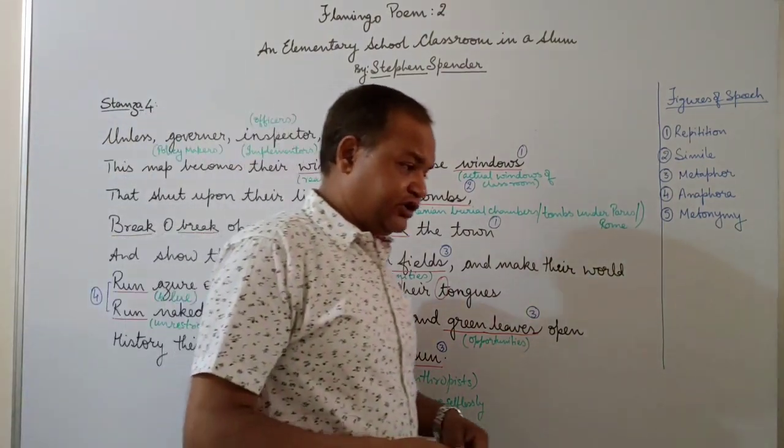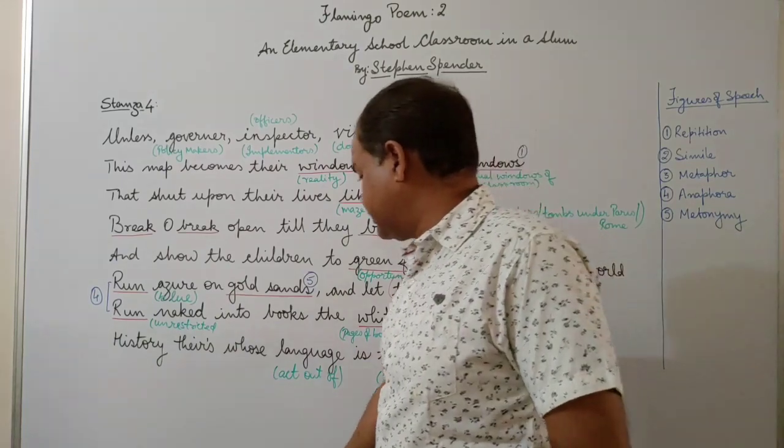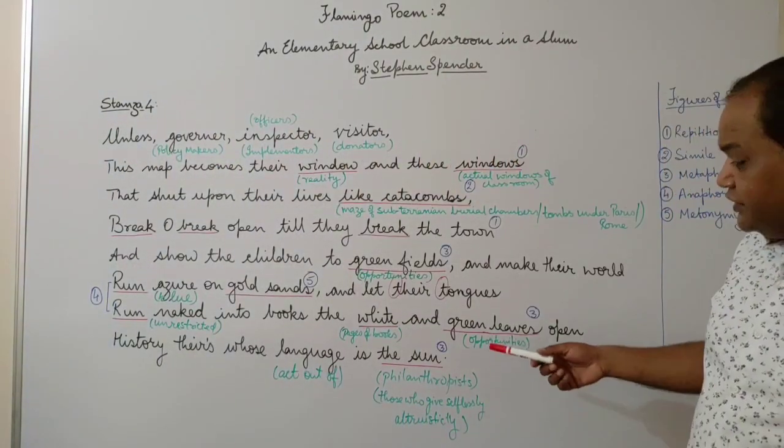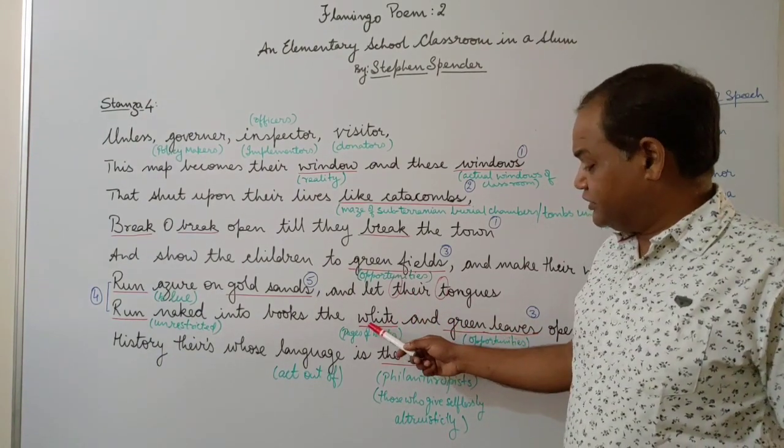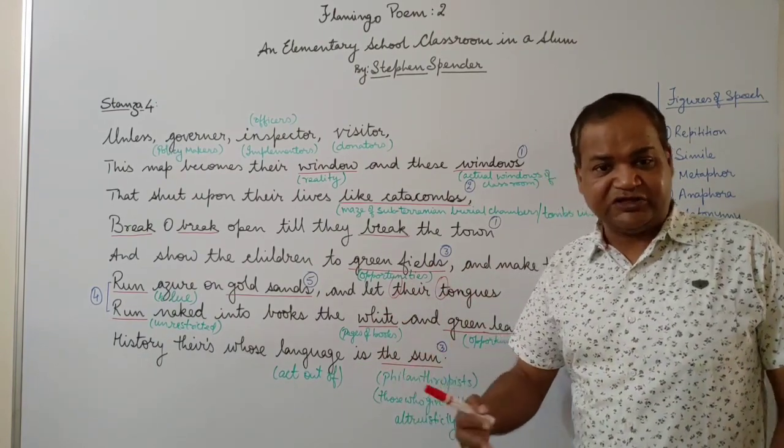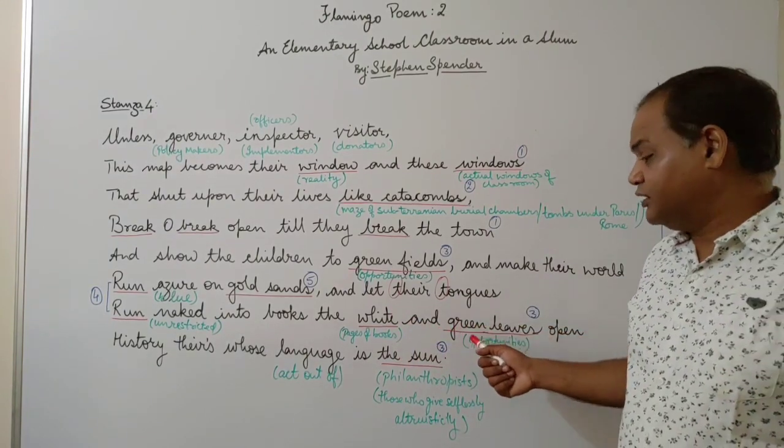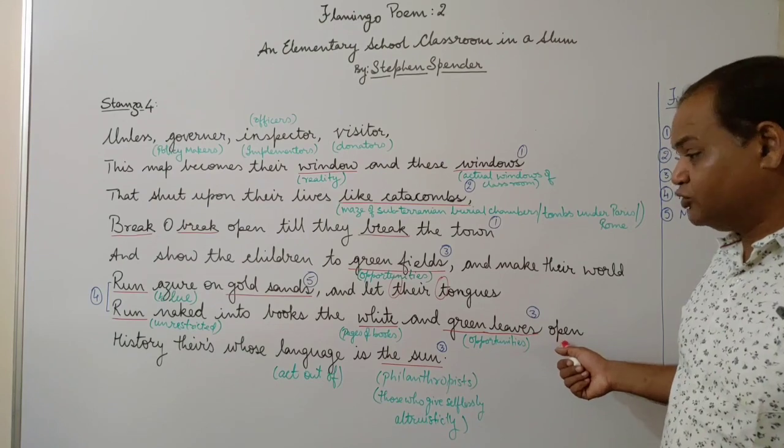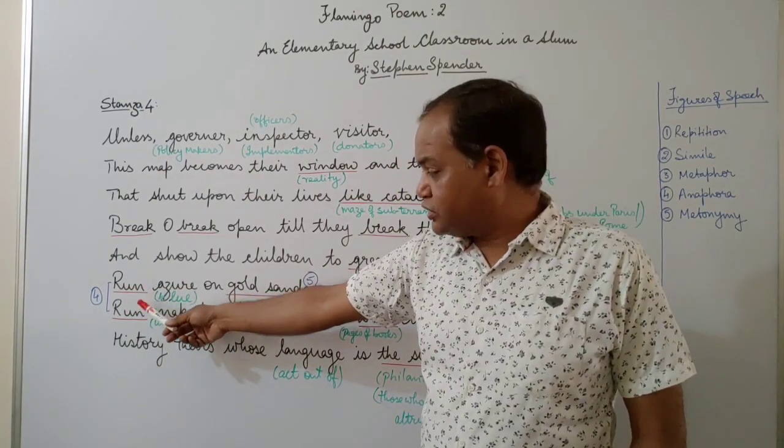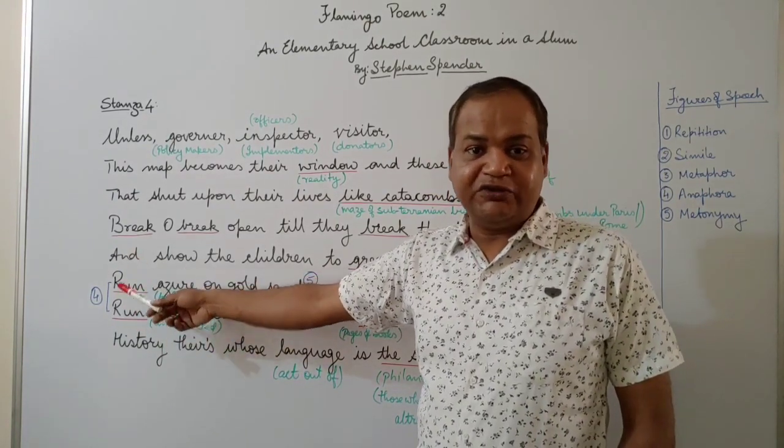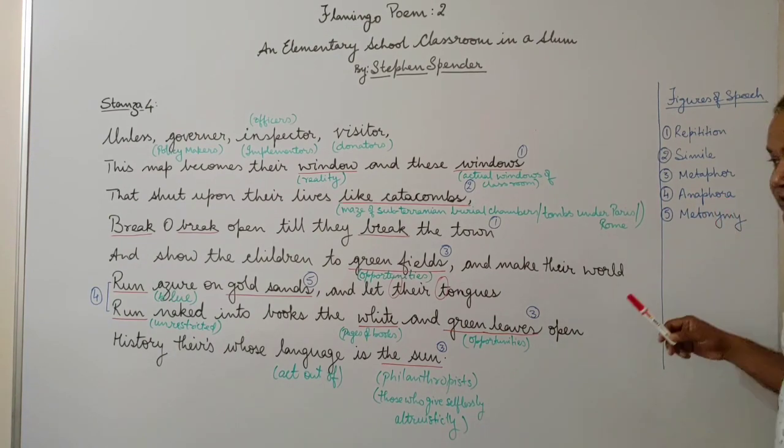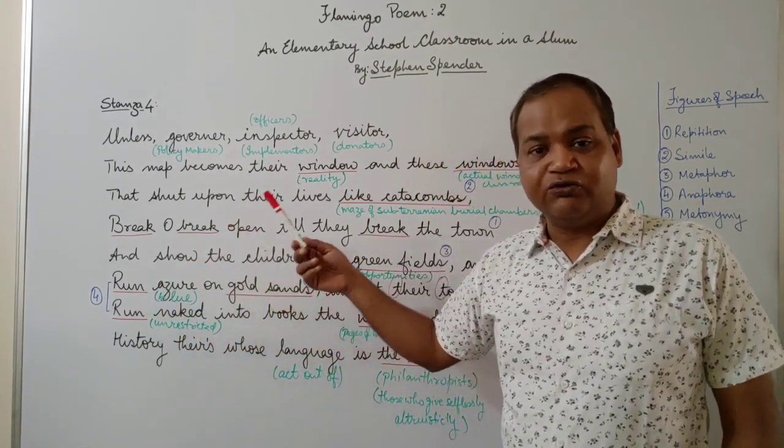And he says 'let their tongues run naked into books'—'naked' here means no holds barred, unrestricted, unrestricted access to education. Let these children have unrestricted access to education. Let them have the opportunity to study as much as they want, because when the white leaves, the pages of the books will be turned by the children, and then as they will go from one page to the next page, basically saying when they will get education, new opportunities will open up for those children. And here in these two lines we see that both these lines start with the same word. Now when two consecutive lines, two or more consecutive lines begin with the same word, there's a figure of speech that happens there, and that is called anaphora: A-N-A-P-H-O-R-A. So that's another poetic device.